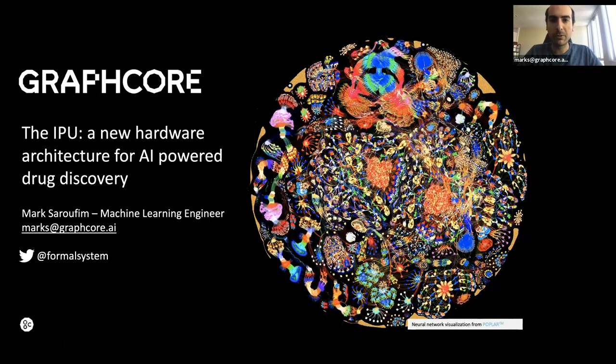At Graphcore, we've built the IPU, which stands for the Intelligent Processing Unit. The IPU is special purpose hardware that we've built from the ground up with machine learning in mind, and we believe we've found a natural home for it in drug discovery.